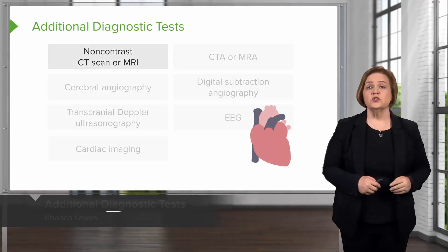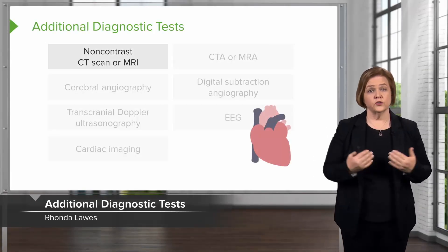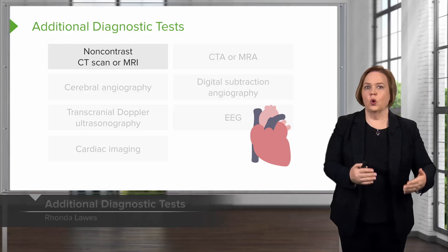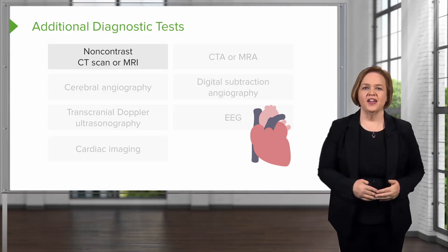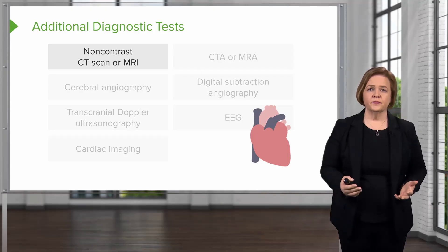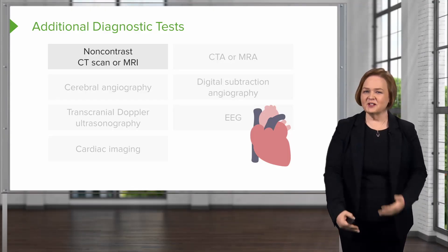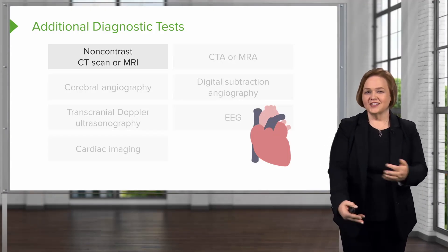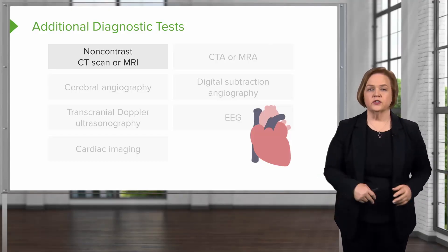Let's talk about some additional diagnostic tests for someone under neuroassessment — ones where you have to go somewhere for a test. The first one is a non-contrast CAT scan or MRI. Non-contrast means we don't use contrast, so we don't inject any kind of dye. That's why we call it non-contrast.